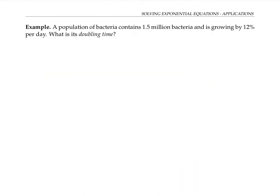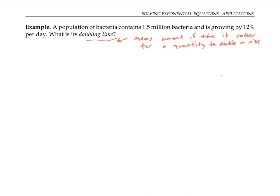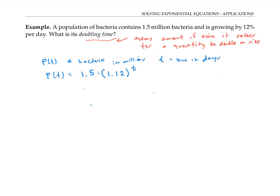In the next example, we have a population of bacteria that initially contains 1.5 million bacteria, and it's growing by 12% per day. We want to find the doubling time — the amount of time it takes for a quantity to double in size. For example, the amount of time it takes to get from the initial 1.5 million bacteria to 3 million bacteria would be the doubling time. Let's start by writing an equation for the amount of bacteria. If p(t) represents the number of bacteria in millions, and t represents time in days, then p(t) is given by the initial amount of bacteria times the growth factor 1.12 to the t, because the population is growing by 12% per day, meaning the number of bacteria gets multiplied by 1.12.